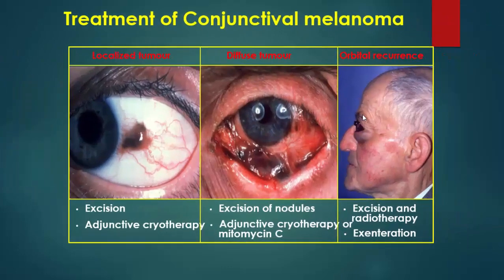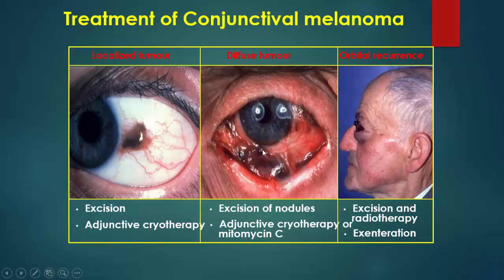Treatment of conjunctival melanoma: if the tumor is localized, we can remove it by excision and adjunctive cryotherapy. In cases of diffuse tumor, excision of the nodules and adjunctive cryotherapy or application of mitomycin C. In cases of orbital extension, treat by excision and radiotherapy or exenteration.